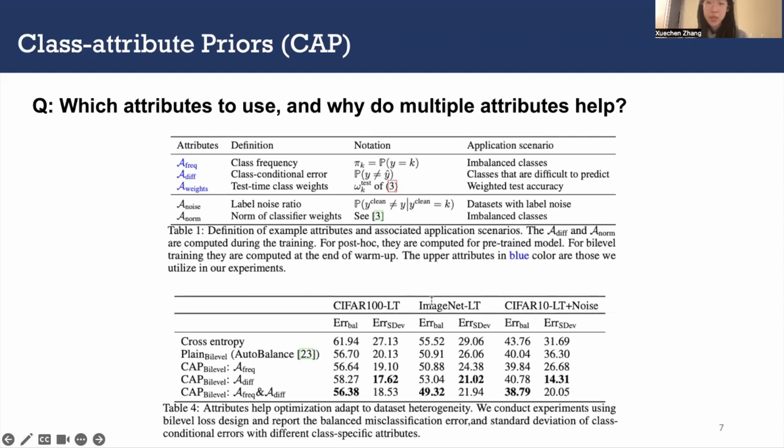Also, different attributes can shape the optimization process differently. Using difficulty achieves smallest standard deviation of class conditioned errors, which means that the result is more fair. The combination of frequency and difficulty show that multiple attributes provide more information about the dataset, which can work together to improve the performance further.